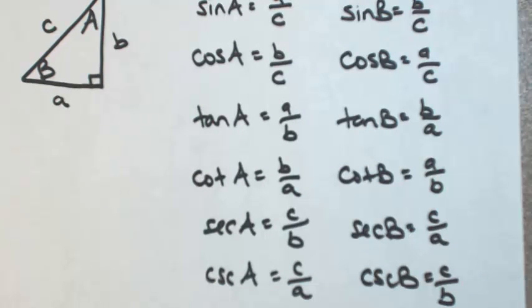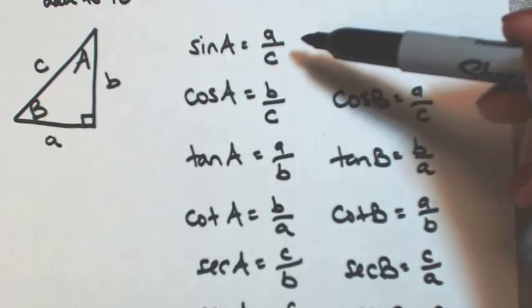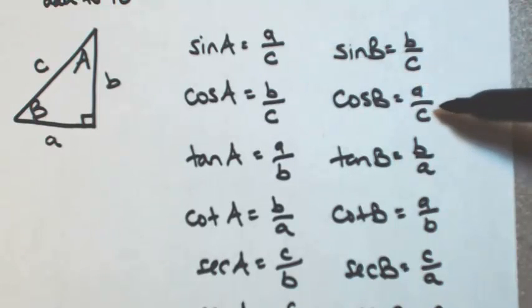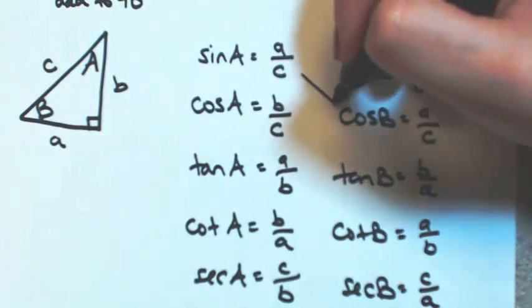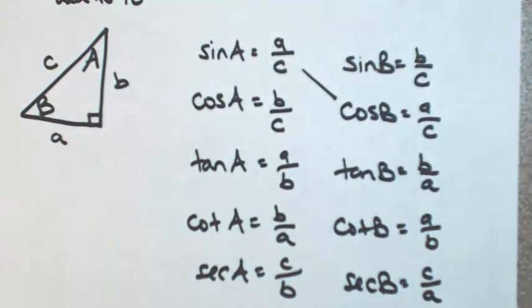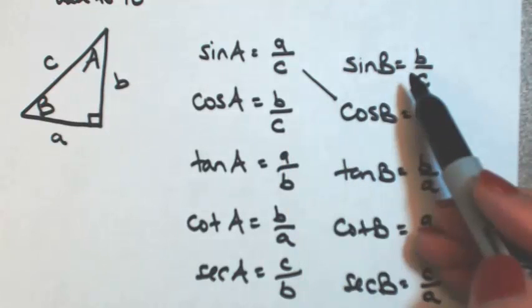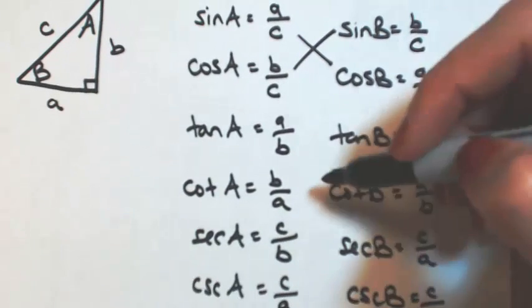Okay, so let's see how angle A relates to angle B. So if I look at sine of angle A, I want to look on the other column for A over C, and we find that that's cosine of B. So that means that sine of angle A is equal to cosine of angle B. Cosine of A, B over C, is the same thing as sine of B. And you'll see that this pattern continues all the way down.